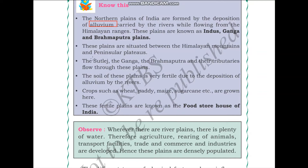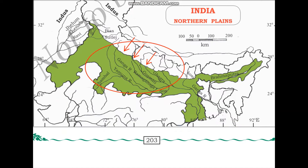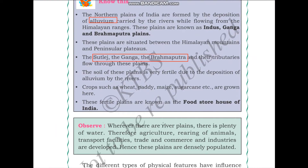The Sutlej, the Ganga, and the Brahmaputra and their tributaries flow through these plains. Looking at the map of the northern plains, we can see the Sutlej river and its tributaries, the Ganga river and its tributaries, and many other rivers and their tributaries that flow through the northern plains.